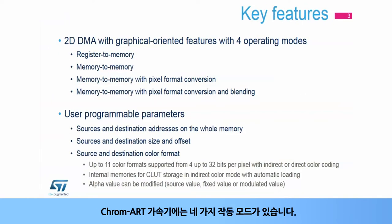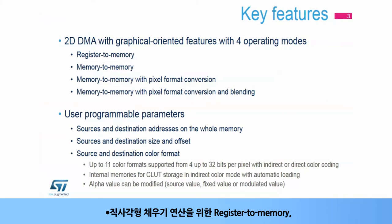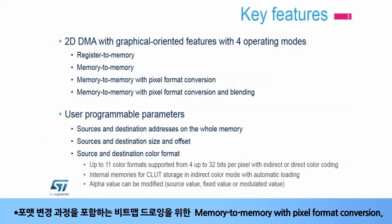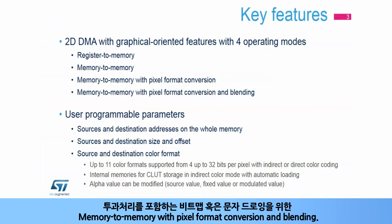The Chrom-ART Accelerator has four operating modes: register to memory for rectangle filling operations; memory to memory for 2D memory copy operations; memory to memory with pixel format conversion for bitmap drawing with format conversion; and memory to memory with pixel format conversion and blending for bitmap or text drawing with transparency.